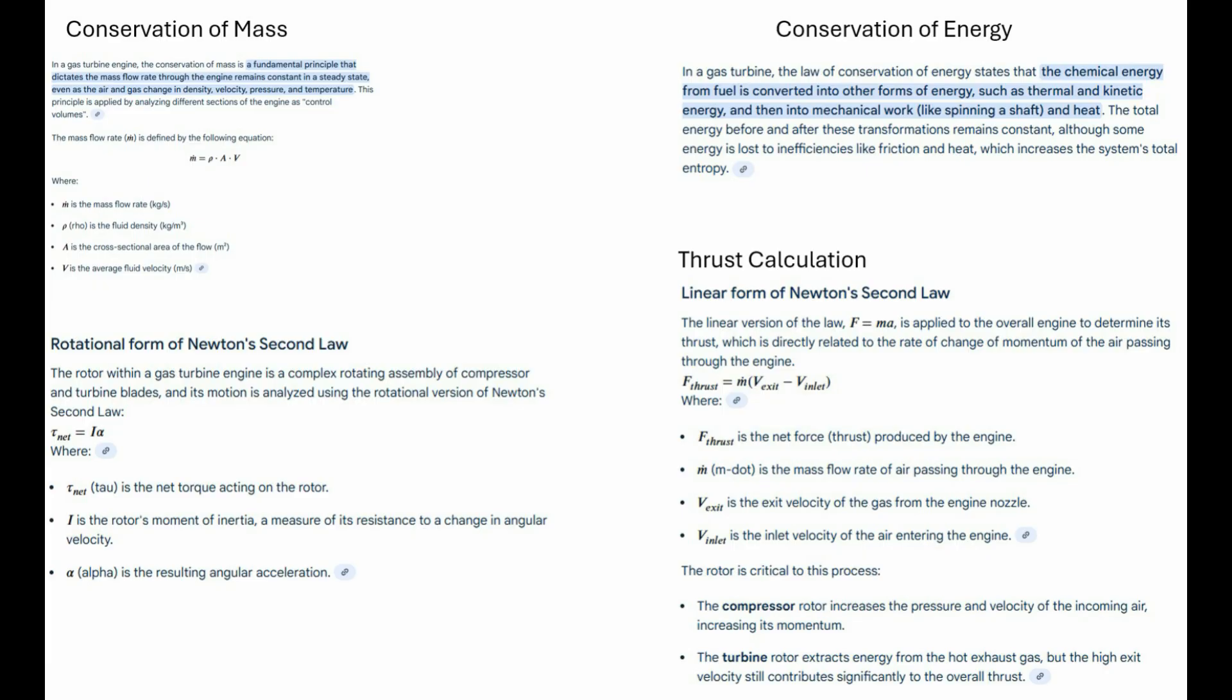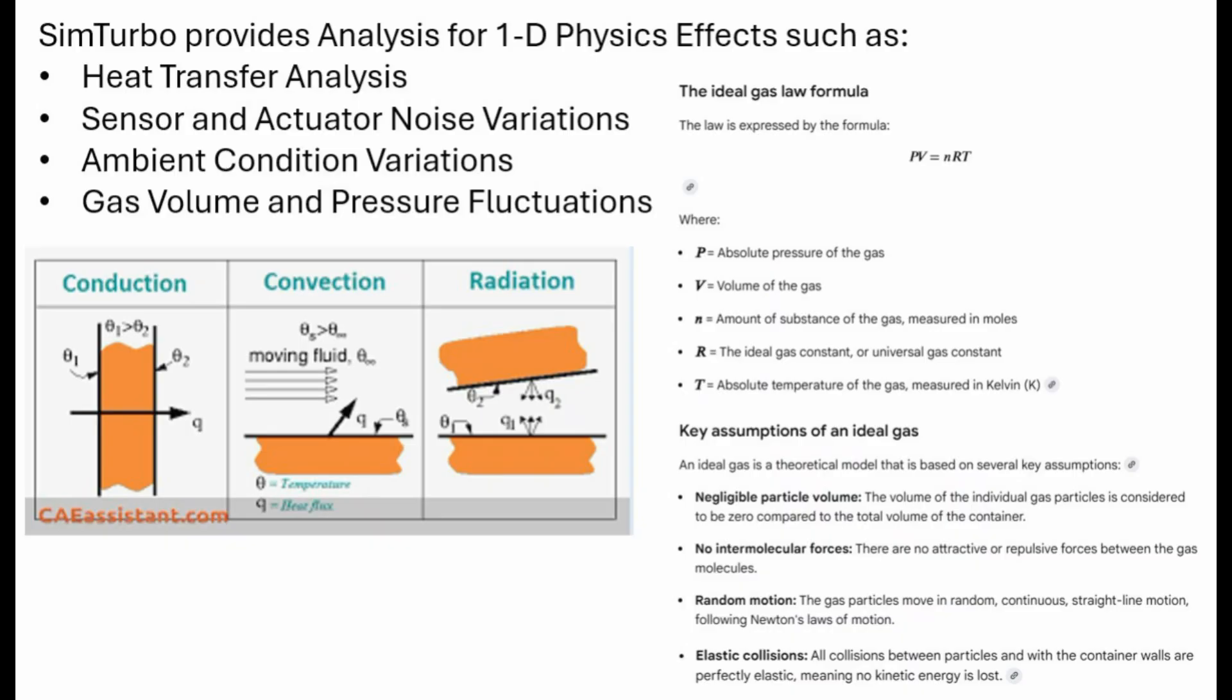So then one-D modeling - that's like saying, okay, I need some detail back, but not too much. You bring back dependency on one single spatial dimension, typically along the main flow path axially. Now you can capture effects that are distributed along that path - things like friction losses building up or heat transfer happening along the duct walls. And maybe most importantly, you can start to see unsteady wave dynamics, pressure pulses moving through the engine. Things zero-D just smooths out because it assumes everything is perfectly mixed instantly. So one-D gives you a bit more insight into the actual flow physics, especially for transients and inside the ducts.